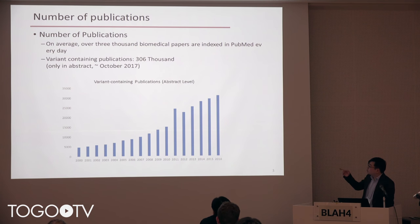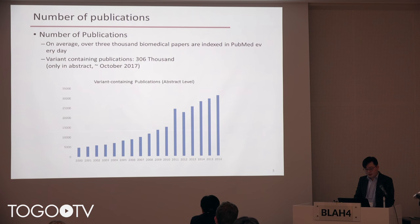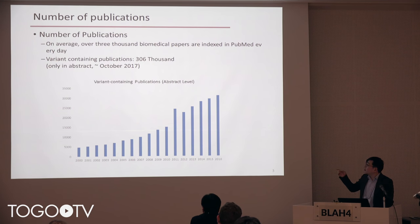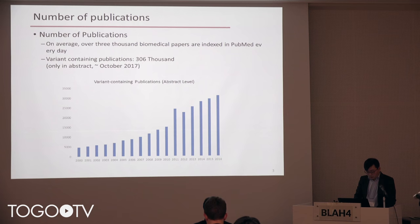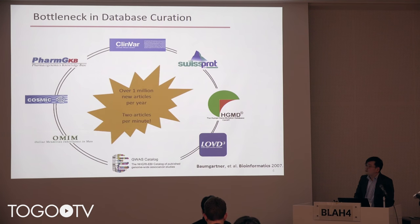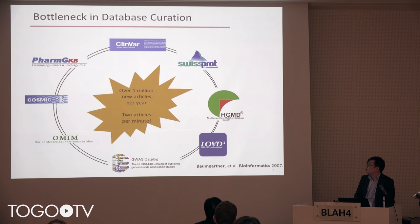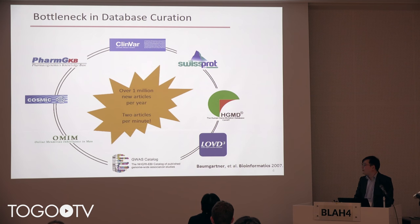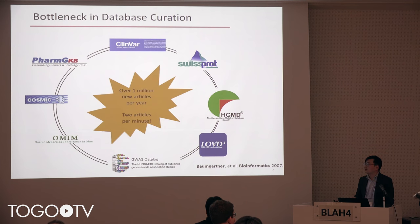I counted the variant-containing publications last week and it is increasing sharply. Just at the abstract level, it's already 30,000 publications per year, so it's not scalable. Baumgartner et al. showed in their analysis that manual curation is not really scalable. But as Ionis said this morning, maybe it's possible if you use machine learning and text mining techniques well.